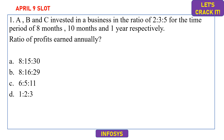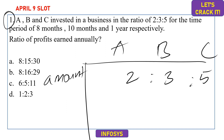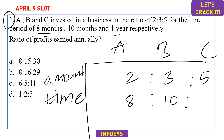The first question from the most recent Infosys exam is a ratios or partnership problem. There are three persons A, B, and C who have invested in the same business. The amounts invested are in the ratio 2:3:5, and the time they invested is 8 months, 10 months, and 1 year (12 months) respectively. We need to find the profit ratio.